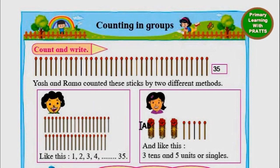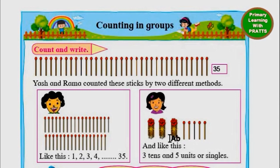And if we put them into bundles, how can we count them? 1, 2, 3. Each bundle is equal to 1 tenth. How many tens are there? 3 tenths. And then 1, 2, 3, 4, 5 — 5 units and 3 tenths. So 3 tenths and 5 units. 3 tenths are equal to 30, so we know the answer is 35.